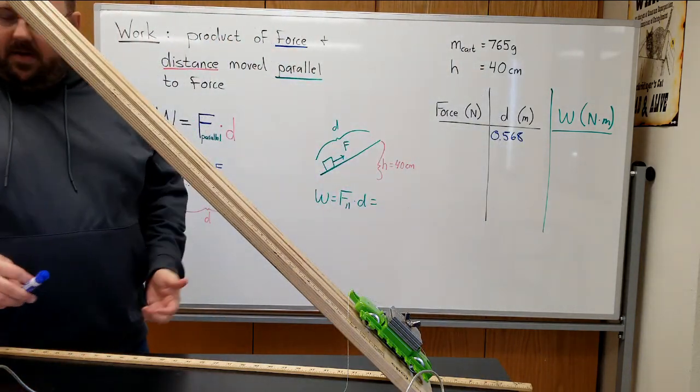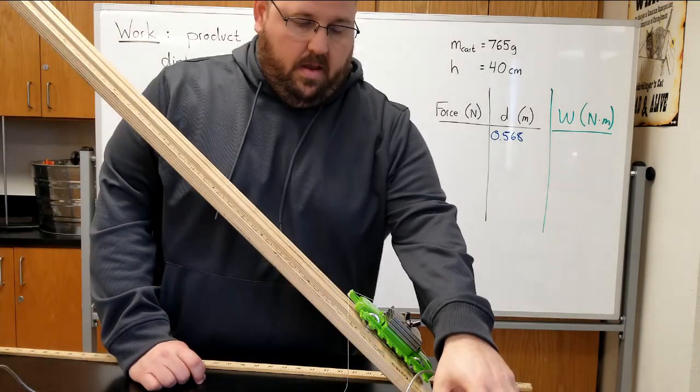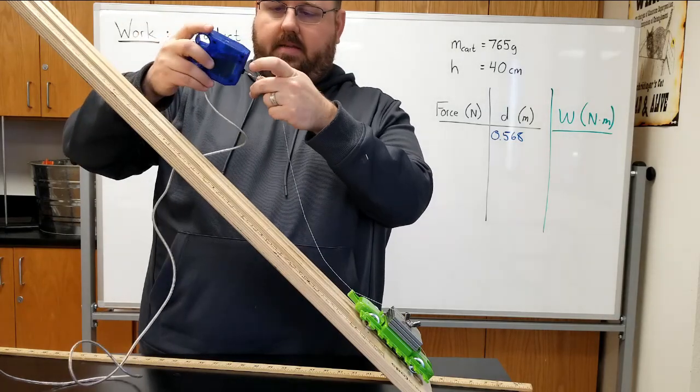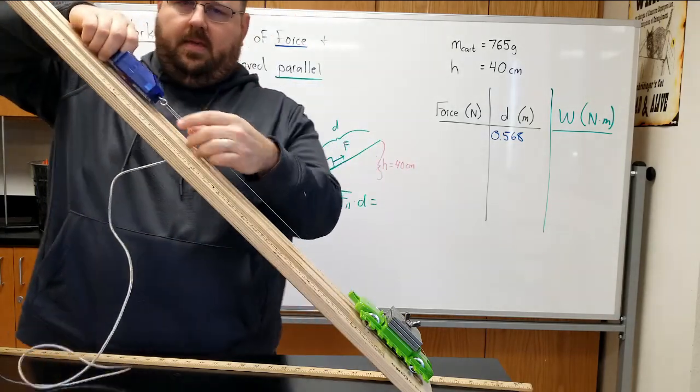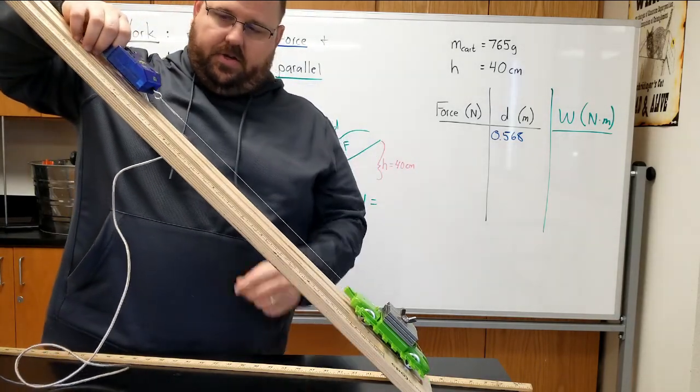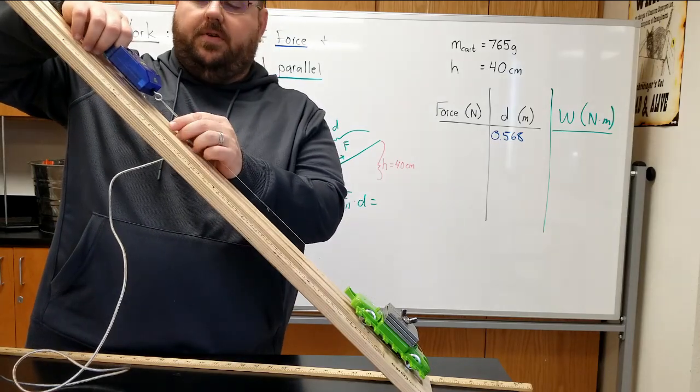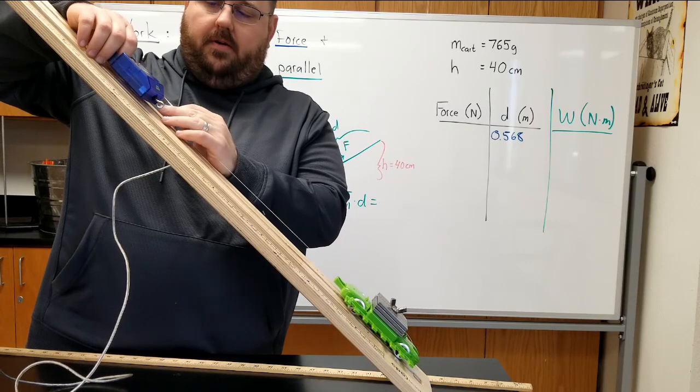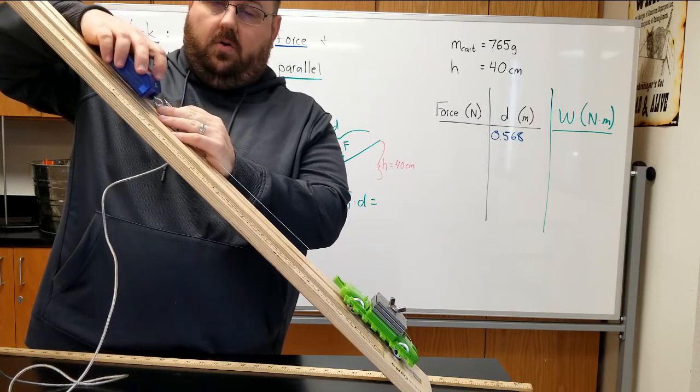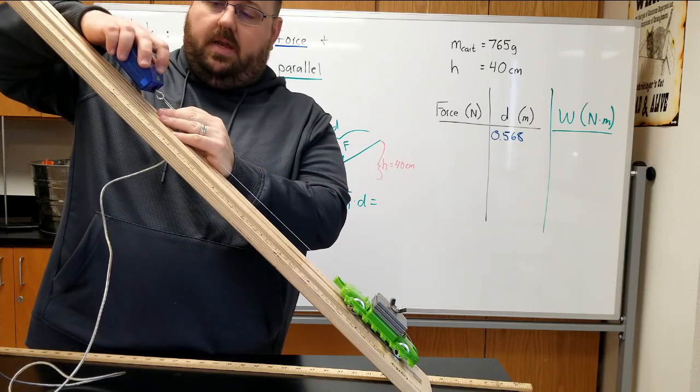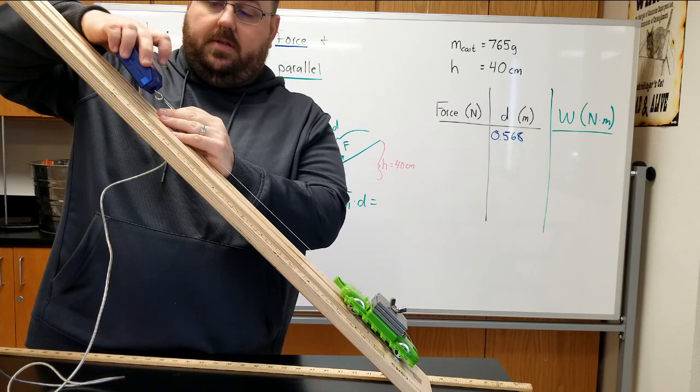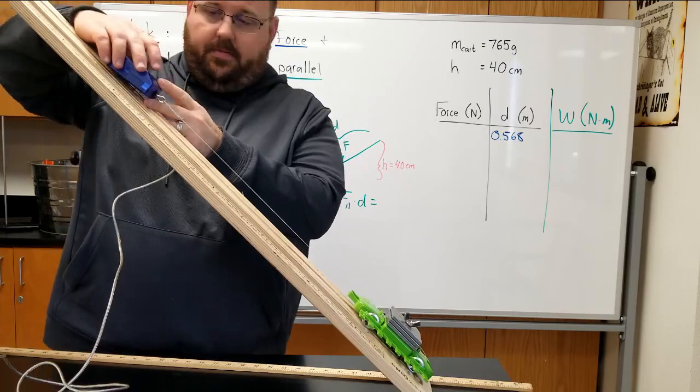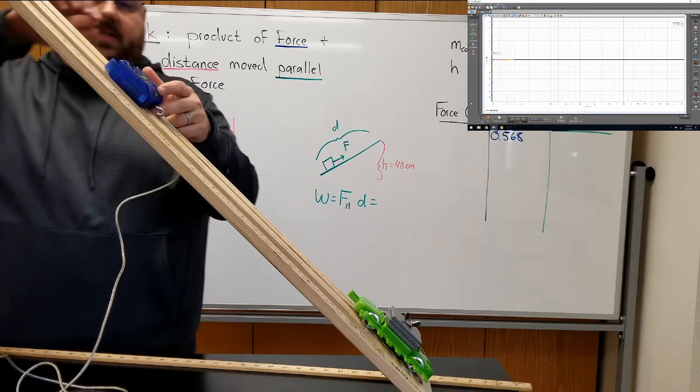The next thing we're going to do is measure the force. I can do that using my force sensor. The first thing I'm going to do is go ahead and connect the force sensor. To make sure that that string is parallel, then I'm going to zero the force sensor. To zero it, I'm going to take the clip off of the hook, hold it in the position that I'm going to use it, and press and hold the zero button on there. Now if I were to start collecting data, I would get zero force.